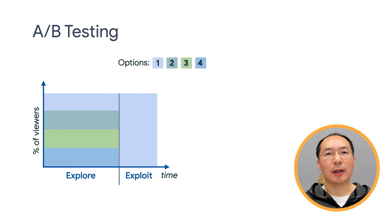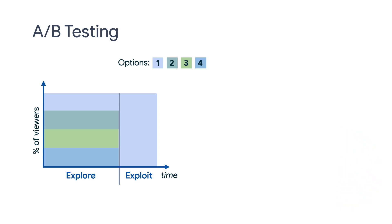Here is a practical MAB example. Suppose you have a website with four different kinds of designs — this could be different layouts, image assets, font sizes, and so on. You want to pick the one that keeps the visitors on your website as long as possible. The easiest thing to do is to set up an A/B test with these four designs for a while and pick the best one based on your observation at the end of the A/B test. In this case, we are exploring by trying out different options. After the exploration, we can exploit the best one.